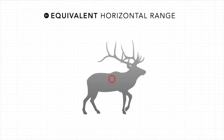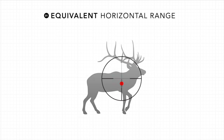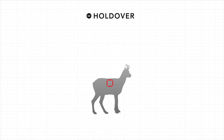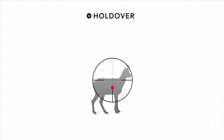The first option is equivalent horizontal range. This output first displays the line-of-sight distance and then the equivalent horizontal range, and is especially accurate if you have a scope with a ballistic drop compensation reticle. The second output is holdover, which first displays the line-of-sight distance and then provides a measurement of how high you should hold over — either in centimeters or inches depending on whether you select EU or US in the menu.